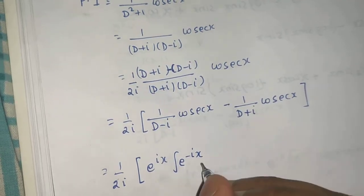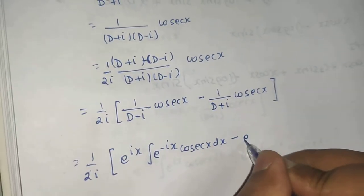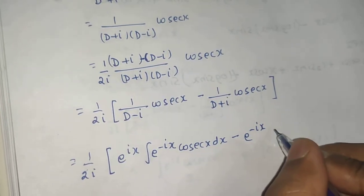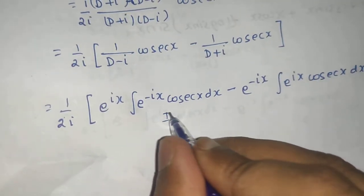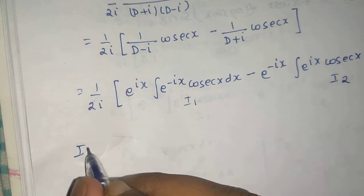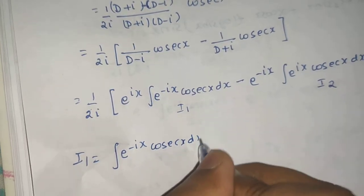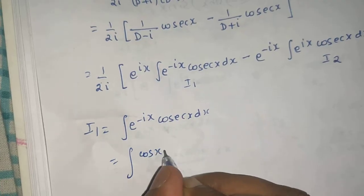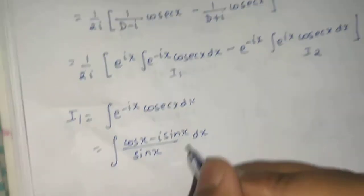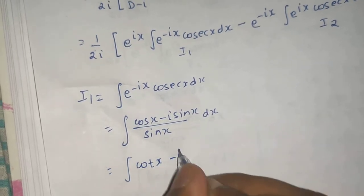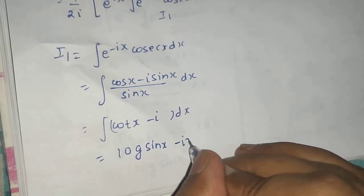Let I₁ = ∫e^(-ix) cosec x dx. Writing e^(-ix) = cos x - i sin x and cosec x = 1/sin x, the integrand becomes (cos x - i sin x)/sin x = cot x - i. Integrating, I₁ = log(sin x) - ix.